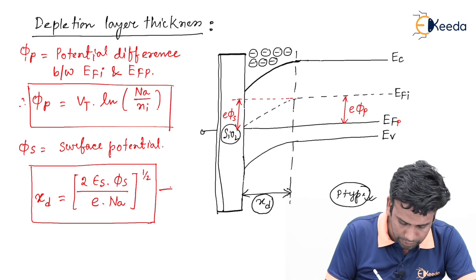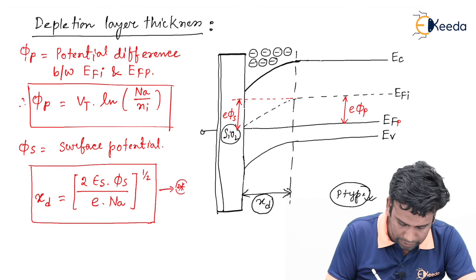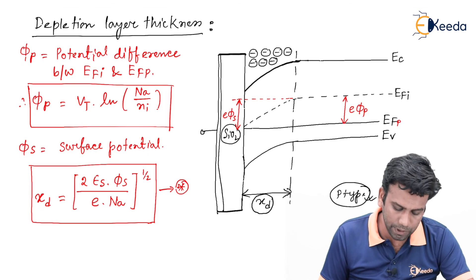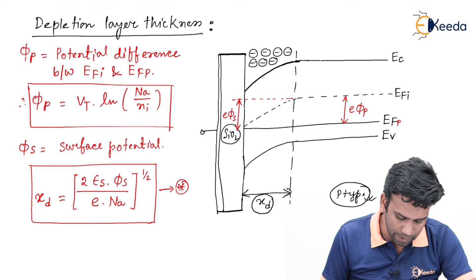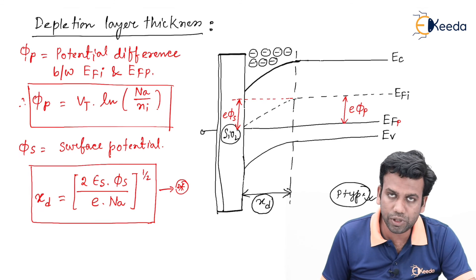This Xd will give us the depletion layer thickness in the depletion mode of the MOS capacitor. This is all about the depletion layer thickness Xd in the MOSFET.